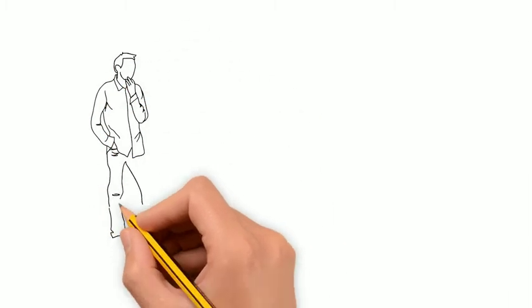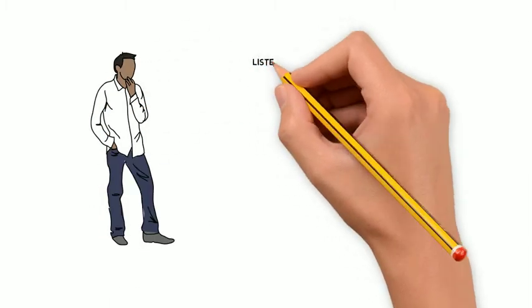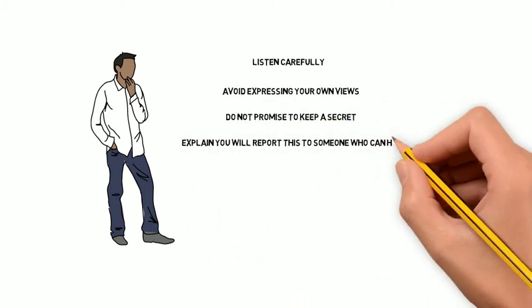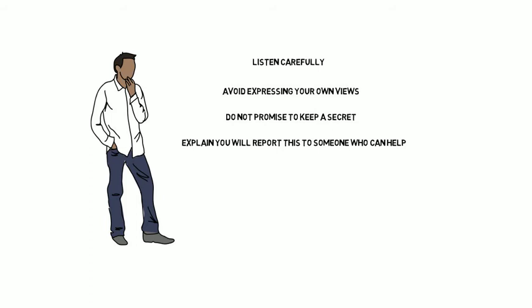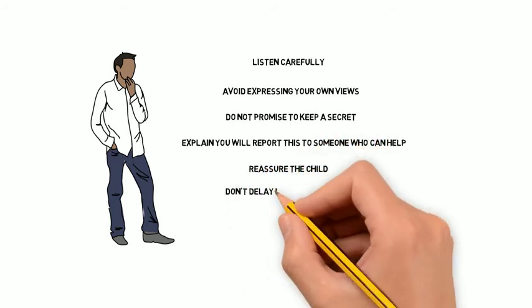If a child was to disclose any kind of abuse to you, here is what you should do. Listen carefully to the child. Avoid expressing your own views on the matter. A reaction of shock or disbelief could cause the child to shut down, retract or stop talking. You must not promise that you will keep the information that is disclosed to you a secret. You can promise to help them and explain that you will report this to someone who can help. Let them know they have done the right thing and do not delay in reporting the abuse.